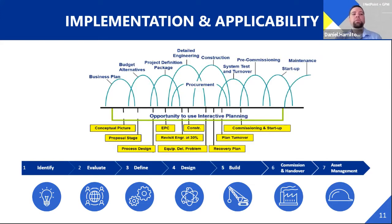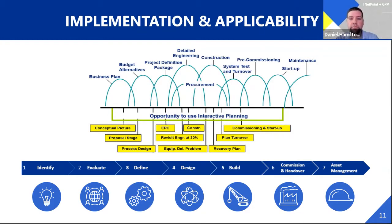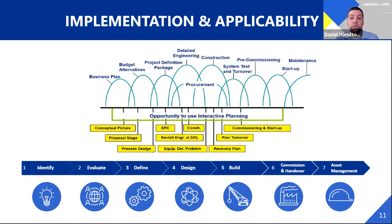Worley has seven phases of a project's life cycle: identify, evaluate, define, design, build, commission and handover, and asset management. Throughout any phase of these projects or a change within one of these phases, we can use interactive planning. Interactive planning can be successfully used in all phases, basically throughout completion of execution including construction. It can be applied to turnaround planning to get to micro detail, advanced work packaging planning where schedules are broken into areas using NetPoint, and also portfolio planning.